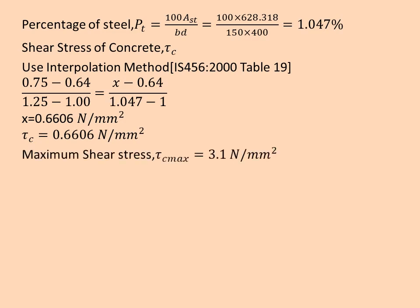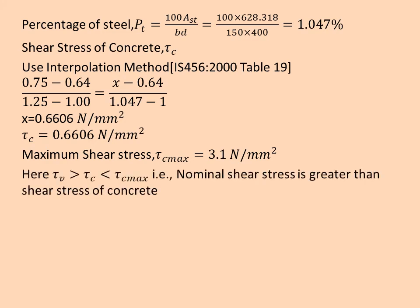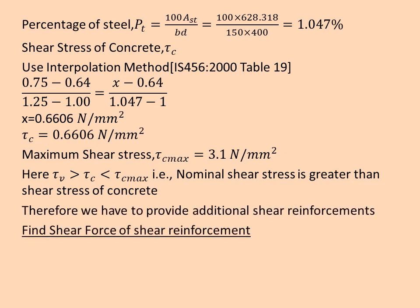After that we find the maximum shear stress that we can handle, that is given in table 20, 3.1 N/mm² for M25 grade concrete. When we check the condition, τv > τc. That is, nominal shear stress is greater than the shear stress of concrete. Hence we have to provide additional shear reinforcement.